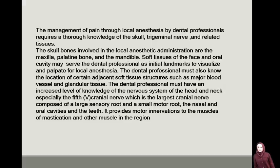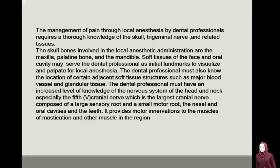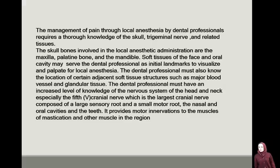The skull bones involved in local anesthetic administration are the maxilla, palatine bones, vomer bone, and the vertebra bone. Soft tissues of the face and oral cavity may serve the dental professional as initial landmarks to visualize and palpate for local anesthesia. A dental professional must also know the location of adjacent soft tissue structures such as major blood vessels and glandular tissue.